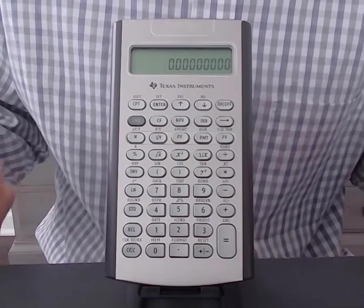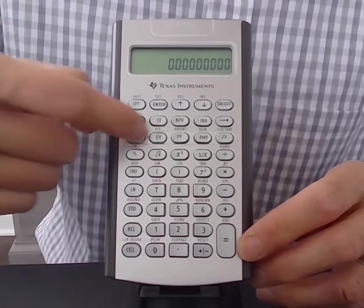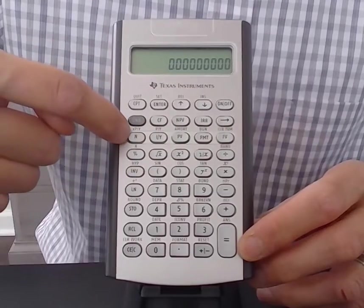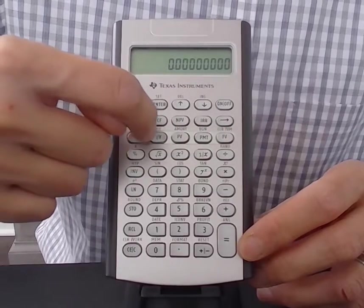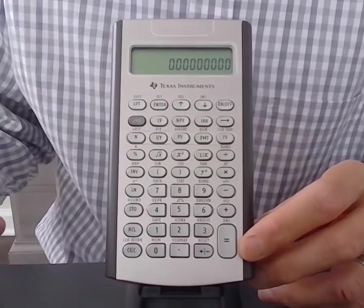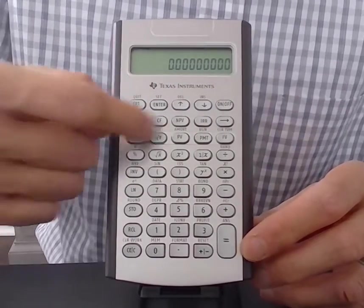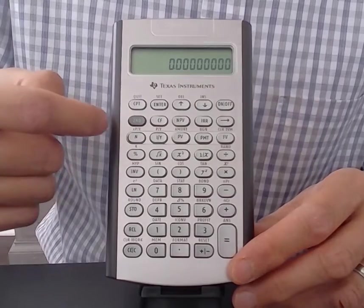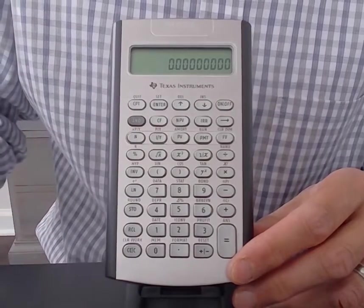First kind of problem I want to show you is using this third row here. This stands for number of periods, interest rate, present value, payment, and future value. If I want to compute any one of these five, I'm going to enter the arguments and then solve for what's left.